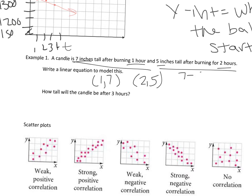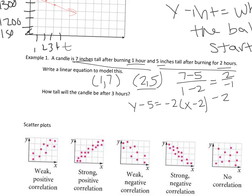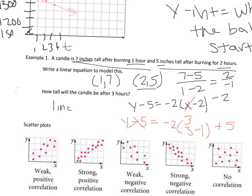First find the slope: (7 minus 5) over (1 minus 2) equals 2 over negative 1, which is negative 2. Now the equation using point-slope form with the point (2, 5) is: y minus 5 equals negative 2 times (x minus 2). To find how tall the candle is after 3 hours, plug in 3 for x. Using order of operations: 3 minus 2 is 1, times negative 2 is negative 2, plus 5 equals 1. So the candle will be 1 inch tall after 3 hours.